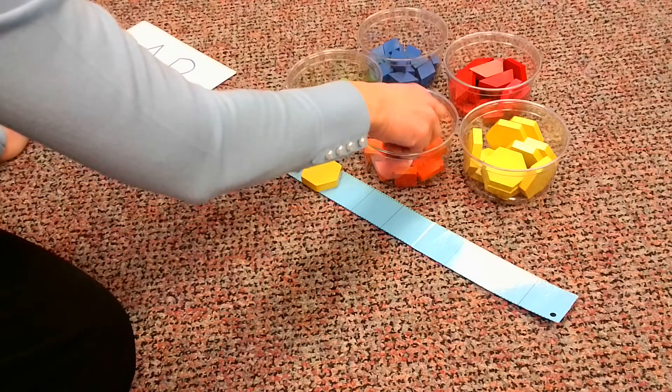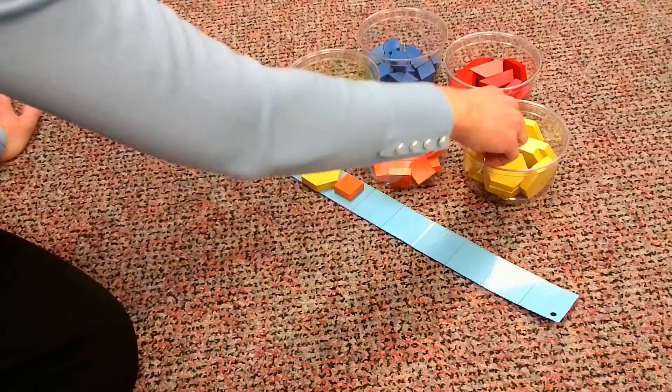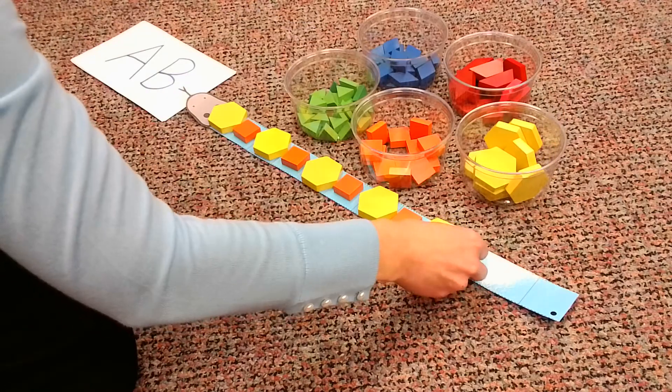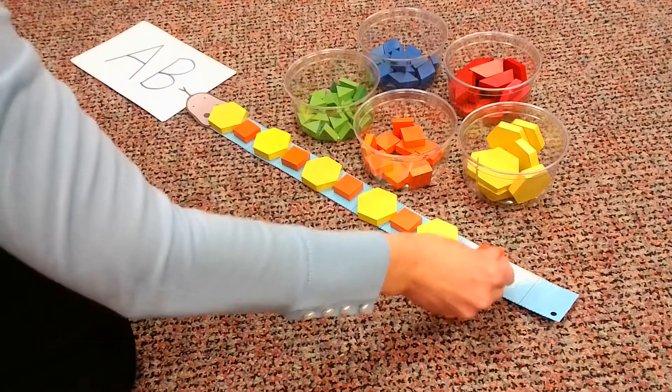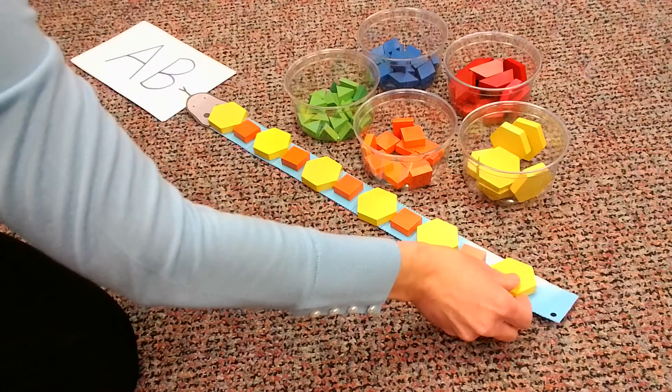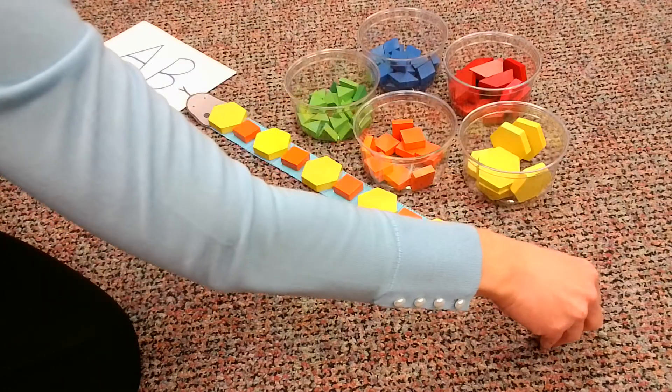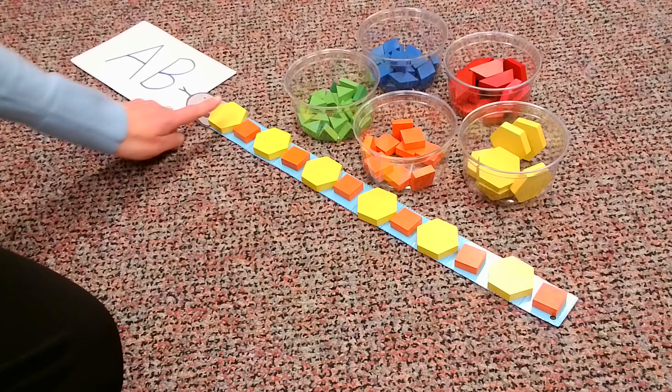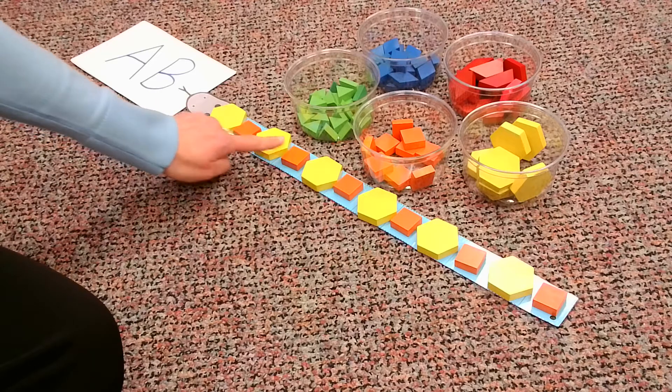Hexagon, square. Hexagon, square. Hexagon, square. Take a look at that snake. I really like him. Perfect for fall with the yellows and the oranges.